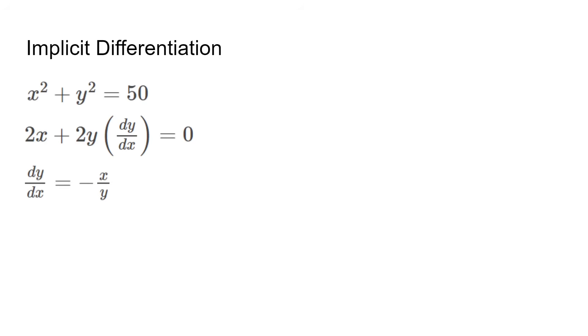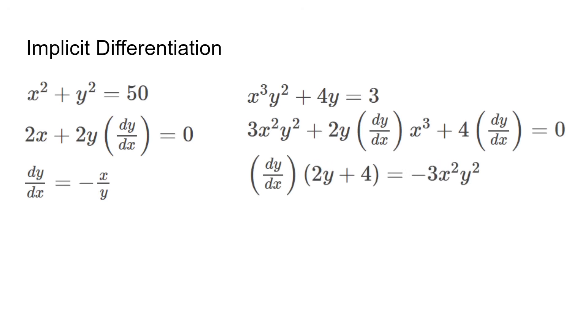Let's take a look at a more difficult example. x cubed y squared plus 4y equals 3. The first step is the product rule, and we get 3x squared times y squared plus 2y times dy over dx times x cubed. Next is 4 dy over dx, and when they add together, they equal 0. The simplest way to solve this is by moving all terms without dy over dx to the right. Next, we factor out dy over dx and divide both sides to solve for dy over dx easily.